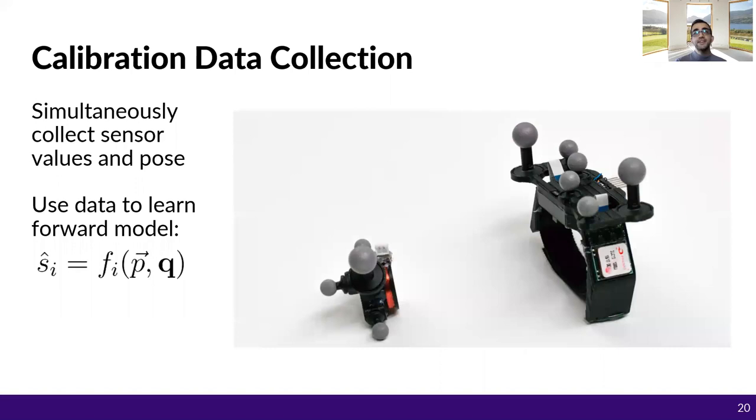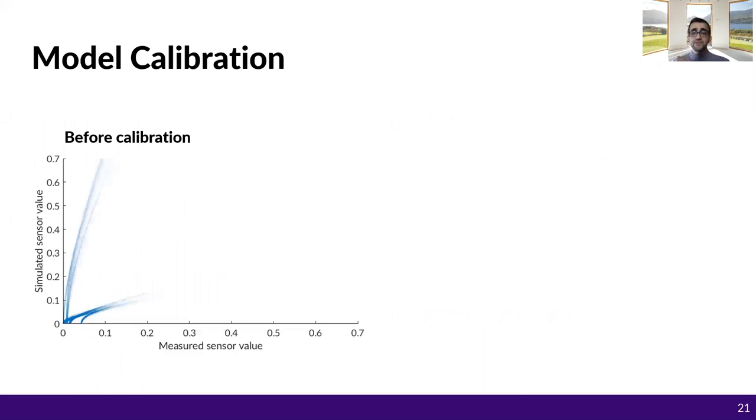We learn these one-time factory calibration parameters empirically by collecting and using data from an optical motion capture system. We place IR reflector active markers on the ring and wristband to get the ground truth and use that to learn the forward model. To evaluate the calibration, we look at the correlation between what the sensor measures and what the forward model estimates.